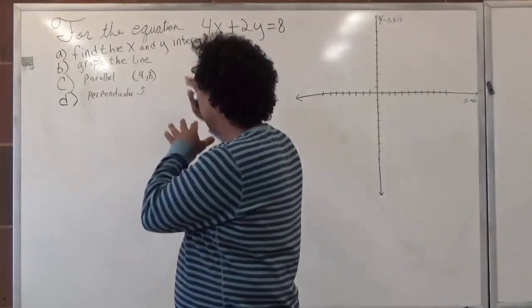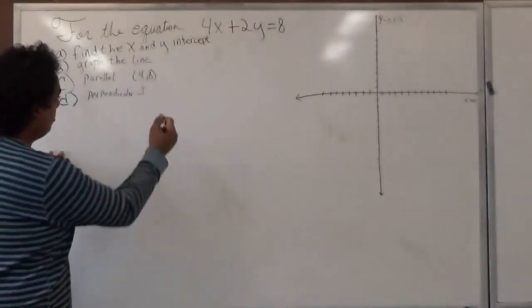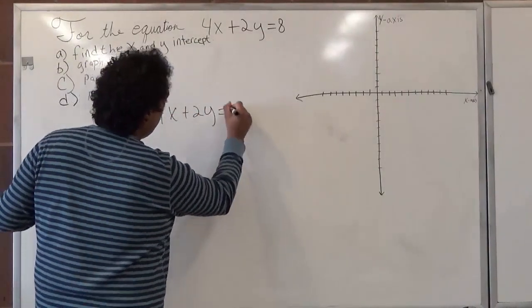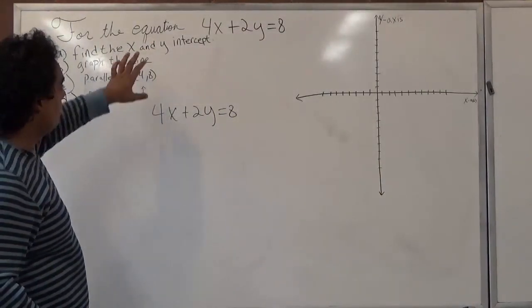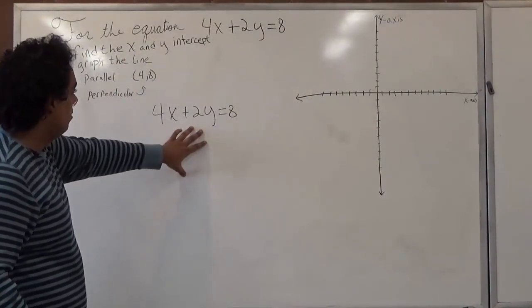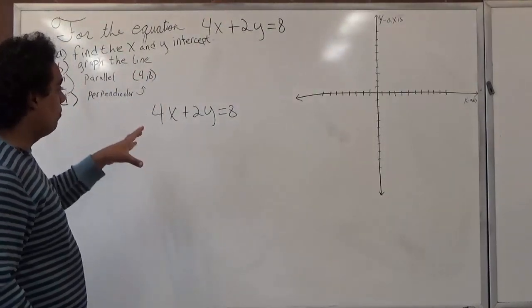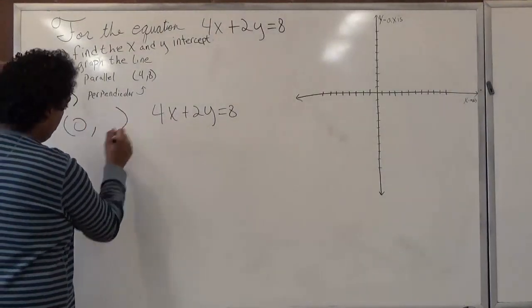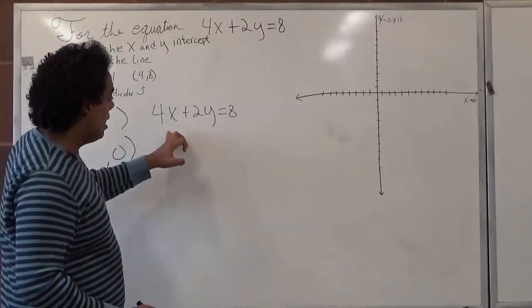So let's start with the x and y intercepts. I'll just rewrite it here, 4x plus 2y equals 8. If you recall, the x intercept is when our y is equal to 0, and the y intercept will be when our x is equal to 0. So we're looking for two points. One will be (0, a number), and the other one will be (a number, 0).